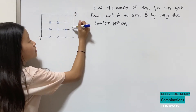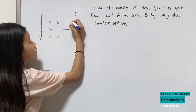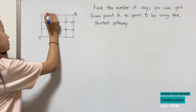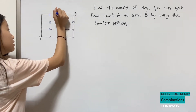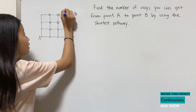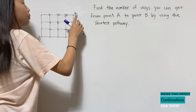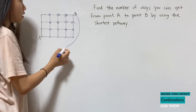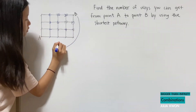To get to the next part, it would be six plus four, which is ten. To get to this part, it's ten plus five, which makes fifteen. To get to this part, it's four. To get to this part, it's ten. To get to this part, it's ten plus ten, which is twenty. And finally, to get to point B, it would be twenty plus fifteen, which is thirty-five.